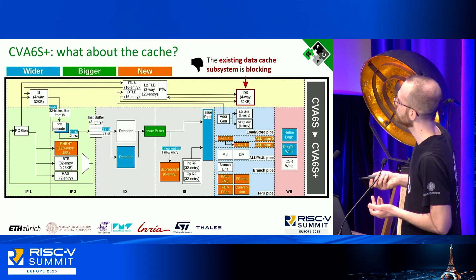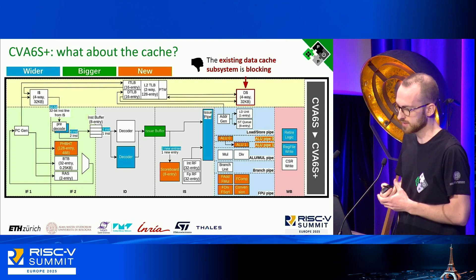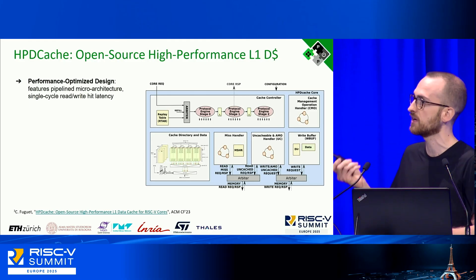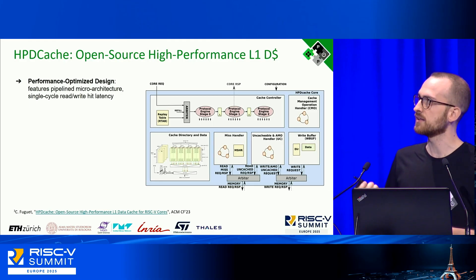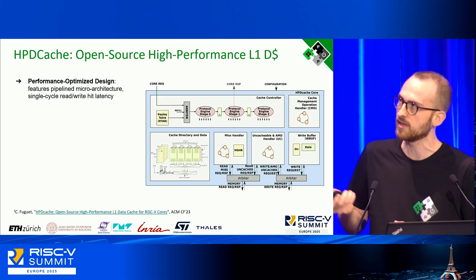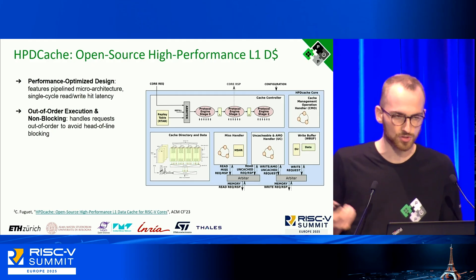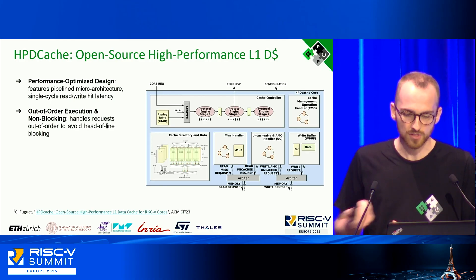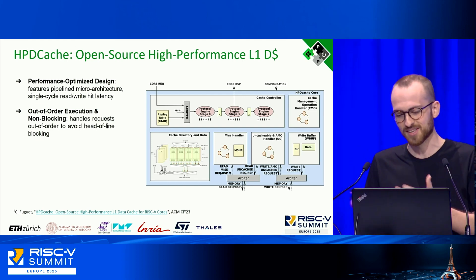The last bottleneck we found was the cache. The legacy caches are not highly performant — they are blocking. Fortunately, there is the HPDcache, the OpenHW High-Performance Data Cache, a pipelined design tailored to high performance with only one cycle of latency on a cache hit. It supports out-of-order execution, is non-blocking to avoid head-of-line stalling, and can reorder transactions — a nice complement to the pipeline improvements.